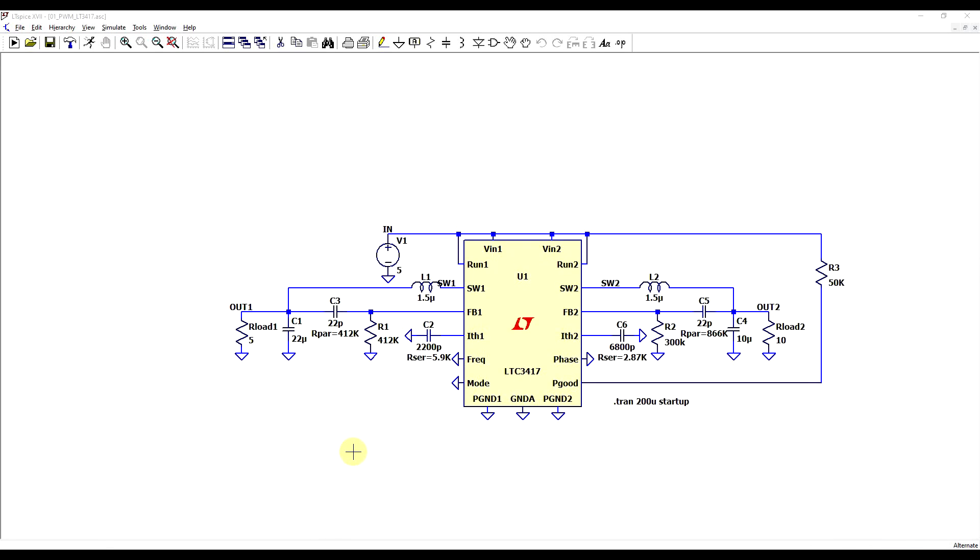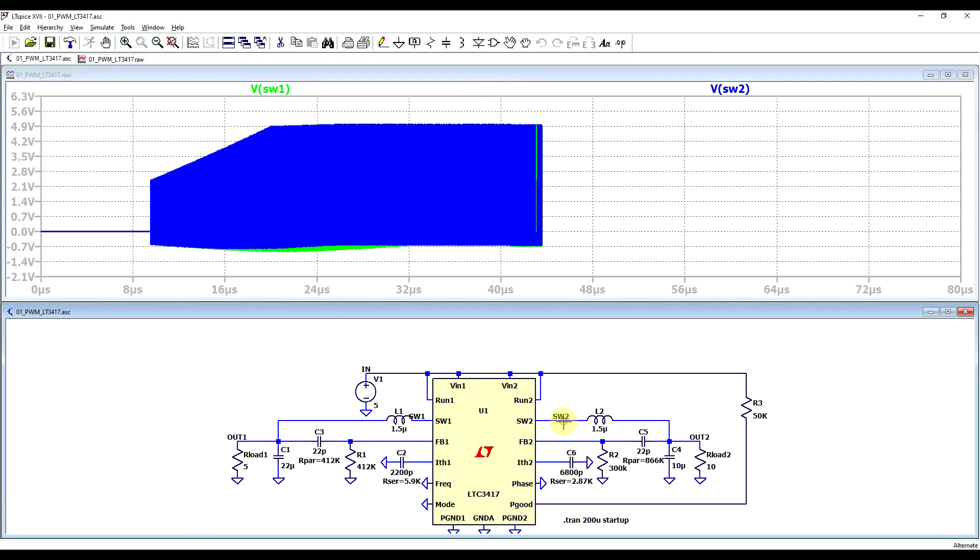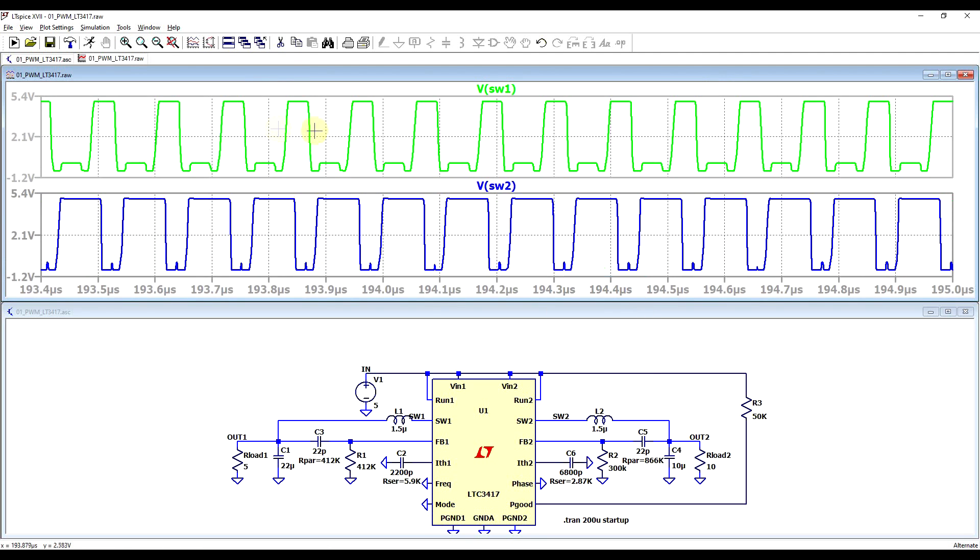So one example of a pulse width modulation power supply is the LTC3417. This is a dual output buck converter, and I modified the test fixture a bit to get two clearly different output voltages, so the feedback resistors are different for the two outputs. If we now run the converter and observe the two switching nodes, and we zoom in a bit where the output is stabilized, and we separate things a bit, we can observe that the switching frequency is the same in both cases, but the duty cycle clearly isn't. The on time for the first switching node is much smaller than the on time in the second switching node.